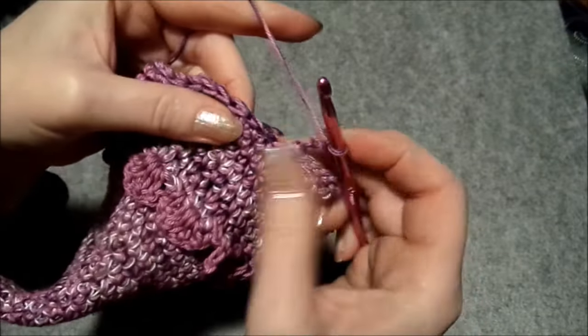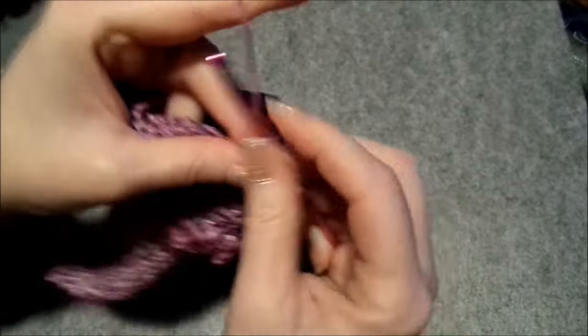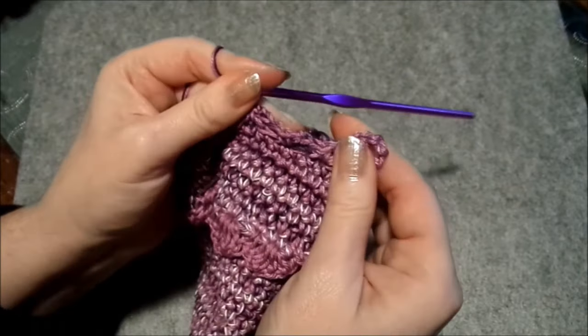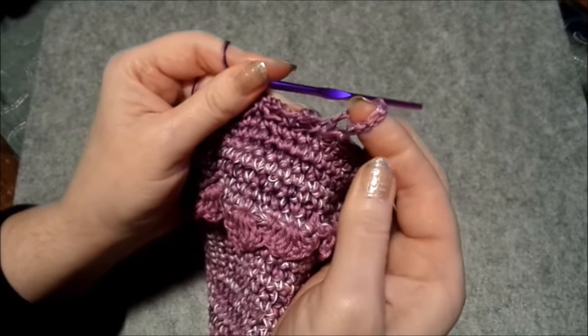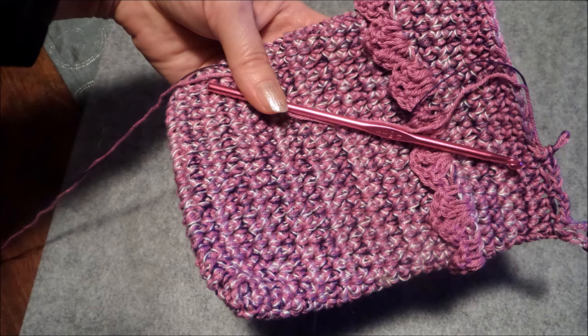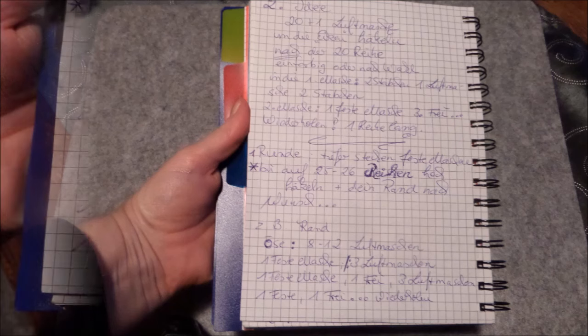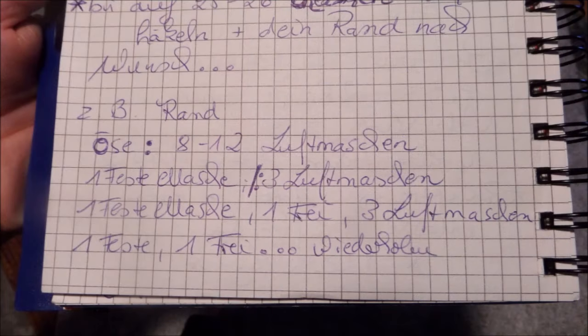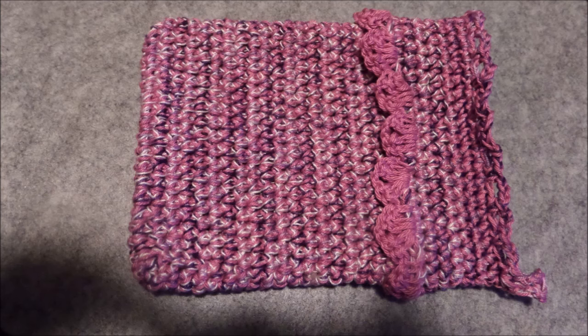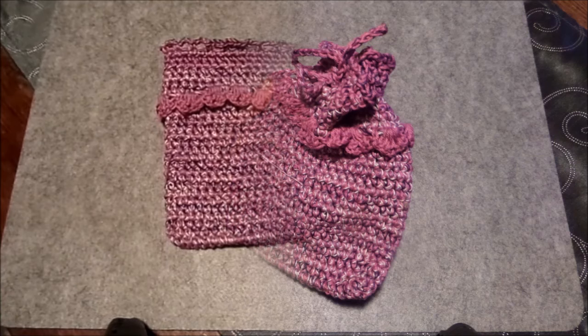Schön in die Ecke rein. Und dann kann man einen kleinen Rand machen. Drei Luftmaschen. Zwei, drei Luftmaschen. Eine frei. Eine feste Masche. Und dann machen wir das rundherum. Und dann kann man noch ein Bindeband machen, wenn man möchte. Das zeige ich dann auch nochmal.